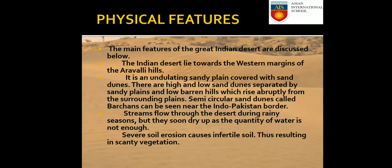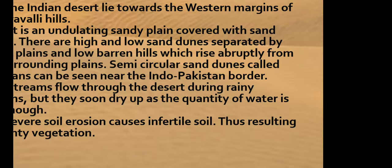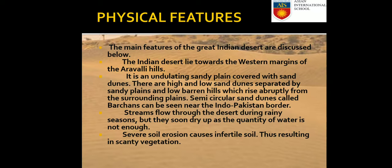The main physical features of the Great Indian Desert: it lies towards the western margins of the Aravali Hills. It is an undulating sandy plain covered with sand dunes — high and low dunes separated by sandy plains and low barren hills. Semi-circular sand dunes called barchans can be seen near the Indo-Pakistan border. Streams flow through the desert during the rainy season but soon dry up. Severe soil erosion causes infertile soil, resulting in scanty vegetation.